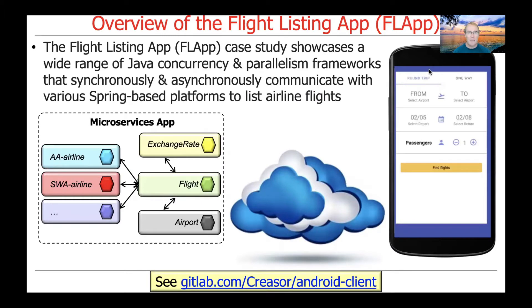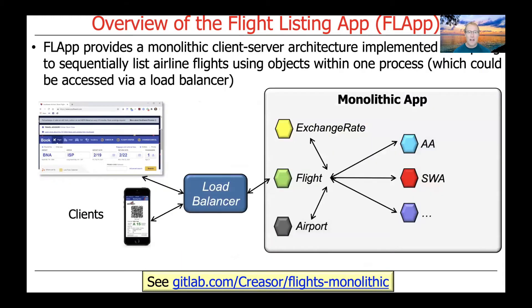The Flight Listing App, or FLAP, case study showcases a wide range of Java concurrency and parallelism frameworks that either synchronously and/or asynchronously communicate with various Spring-based platforms to list airline flights. You can take a look at the Android client and access it at the link below. There's also a video on my YouTube channel that walks through the source code and shows how this client app works. FLAP provides a monolithic client-server architecture that's implemented to sequentially list airline flights using objects within a single process.